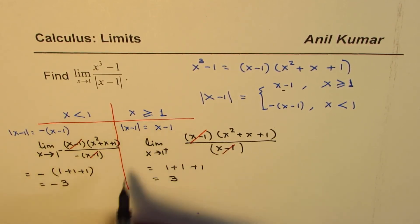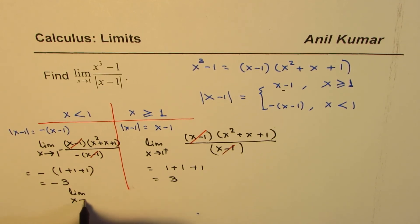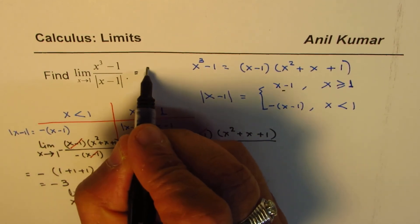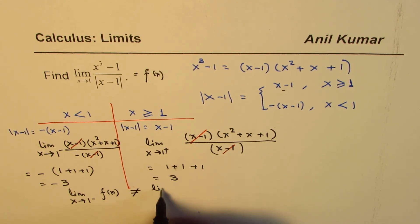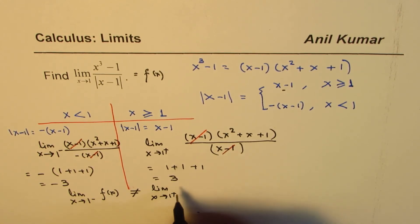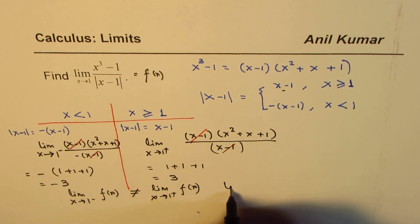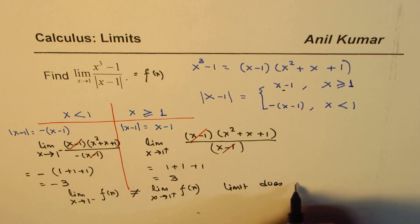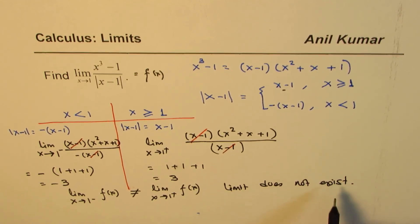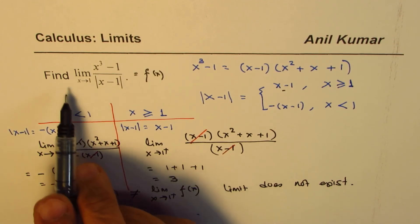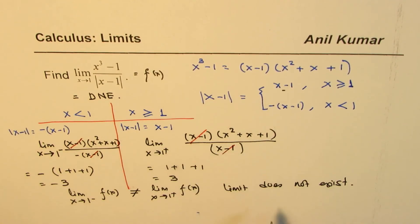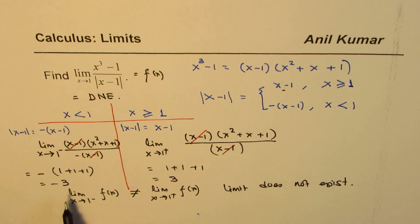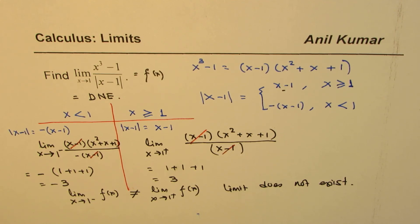Since the limits are not equal — the limit of f(x) as x approaches 1 from the left is not equal to the limit as x approaches 1 from the right — we say the limit does not exist. The limit does not exist since the limit from the left side is not equal to the limit from the right side. I hope that is clear. Thank you and all the best.